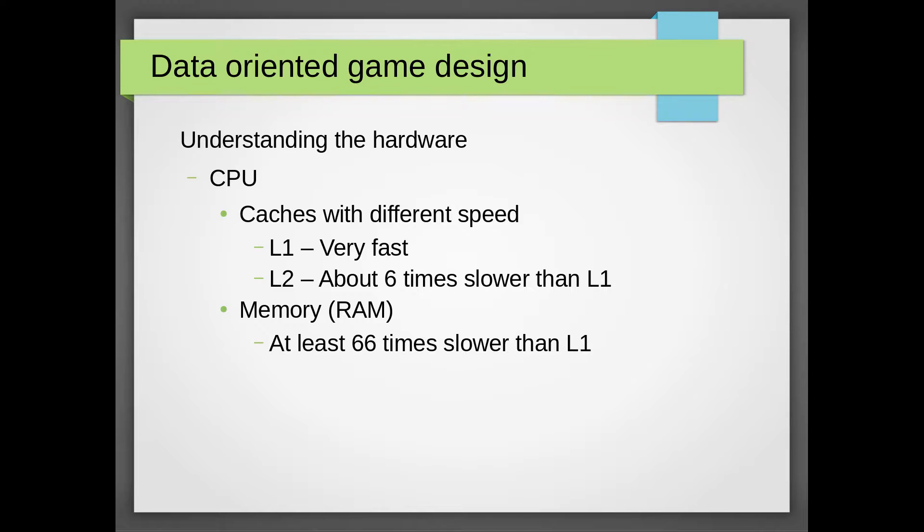An example is Intel's Sandy Bridge architecture which is what is used in the second generation of the i7, i5 and i3 processors. Here we got an L1 cache of 64 kilobytes, an L2 cache of 256 kilobytes and even an L3 cache.